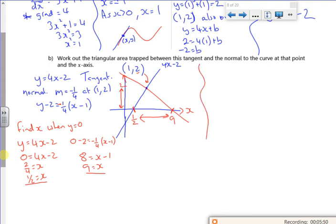So I know the height, because that's the y value. So I know the height is 2, and the width will be 9 take a half, which is 8 and a half, which is 17 over 2. So my area is a half base times height, which gives me 17/2 units squared.